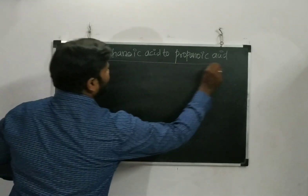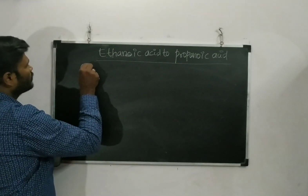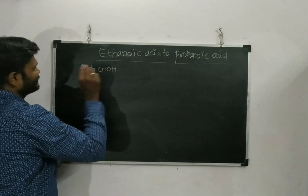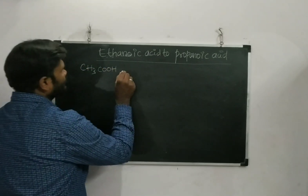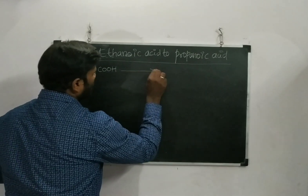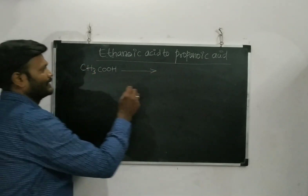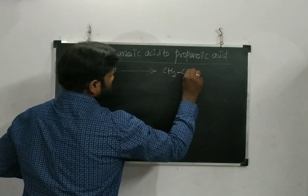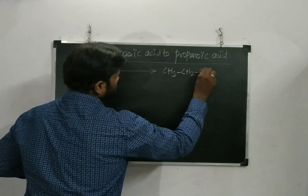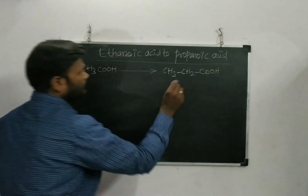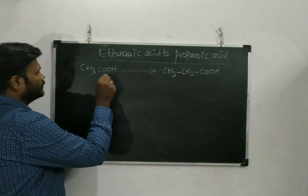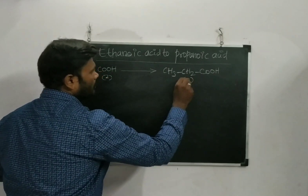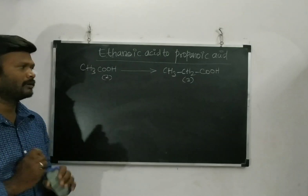Whenever you do the conversion, you have to write the structure properly. Ethanoic acid is a two-carbon containing acid. Propanoic acid is a three-carbon containing acid: CH3, CH2, COOH. So looking at the reactant and product, here we have two carbon atoms and there we have three carbon atoms.